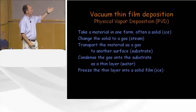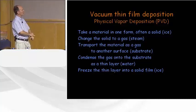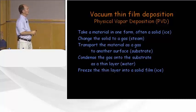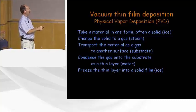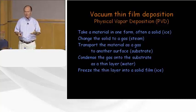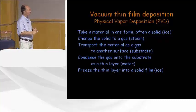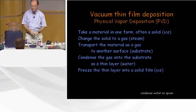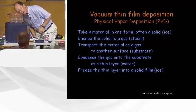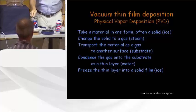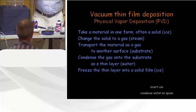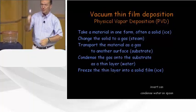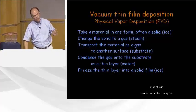For vacuum thin film deposition, we take a material as a solid, change it to a gas, transport that material as a gas to another surface — our substrate — and it condenses on it. It's no more magic than that. I have a pop bottle here filled with water on a heater, just starting to boil. I hold a silver spoon over the steam and we get water condensing on the spoon. That's exactly what happens inside our vacuum systems: we form a vapor of the material we want to coat, put something in there to be coated, and it condenses on it.